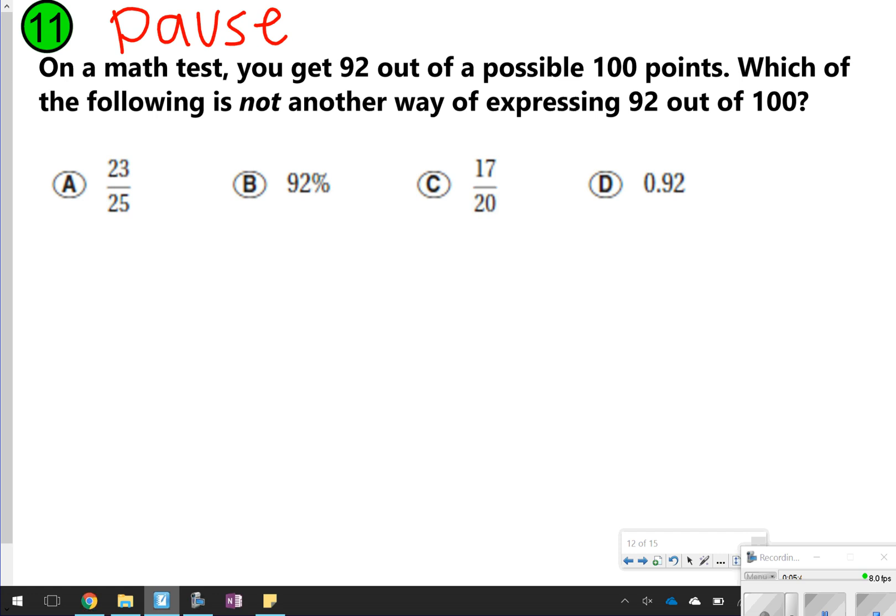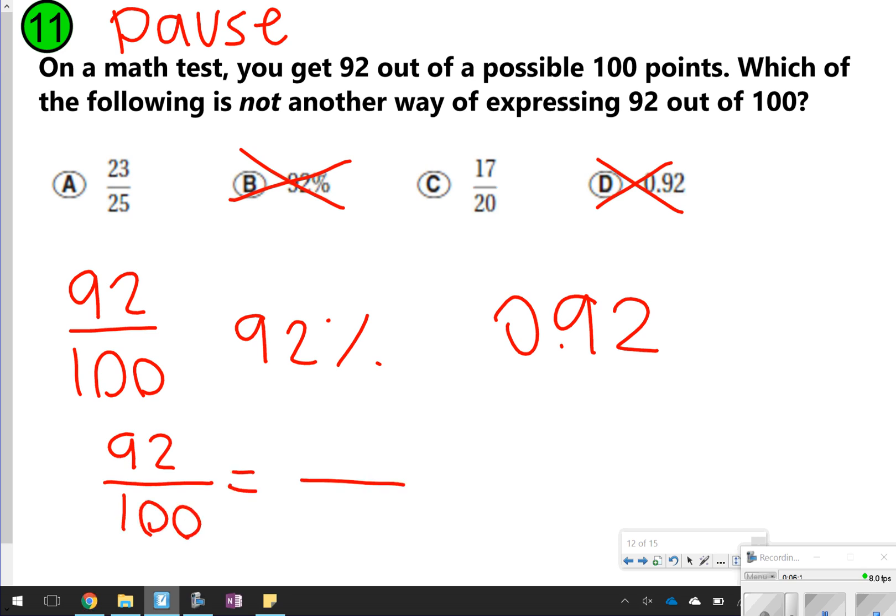Okay, it says for number 11, on the math test, you get a 92 out of 100 points. That's a 92%. Which of the following is not another way of expressing 92 out of 100? Well, we know that 92% is 92%. We also know that 0.92 would also be representing 92%. So the only thing we need to really check are these two fractions. Remember, with fractions, you can simplify. So if you took your calculator and cut 92 in half, maybe that's a good way you can start simplifying. You're going to get 46 50ths. I divide those by 2, and we divide by 2 one more time. 46 divided by 2 is 23, and then 25. So this 23 25ths is representing 92%. So the only one that doesn't represent 92 out of 100 is C, 17 over 20.